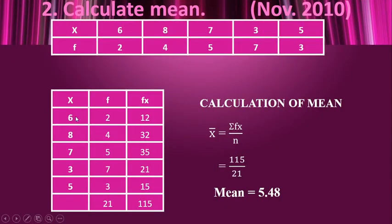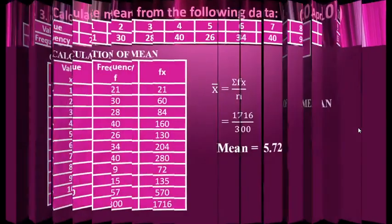Here again, the x values are 6, 8, 7, 3, 5 and frequency is 2, 4, 5, 7, 3. Total of frequency is 21, which is n. fx is f × x: 2×6, 4×8, 5×7, 7×3, 3×5. Total of fx, σfx, is 115. So the formula gives σfx 115 / n 21, and the arithmetic mean is 5.48.